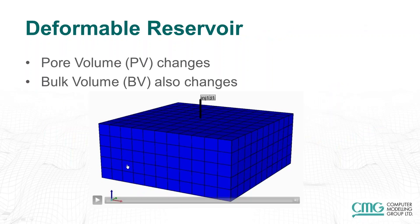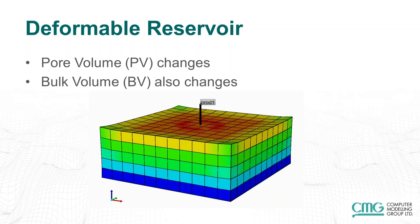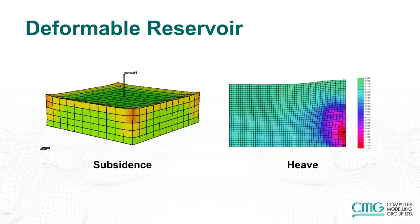In a deformable reservoir, both the pore volume and the bulk volume can change, which means the grid block shapes can change — as you can see happening in this animated slide. Here we have a producer and an injector in a cyclic steam simulation; because of the operation of these wells, the ground subsides and the grid block shapes are changing. Another example: on the left side, a producer well in a simple reservoir causes subsidence, meaning the top of the reservoir sinks in. On the right-hand side, an example from steam assisted gravity drainage where steam is injected at high pressure and temperature, causing the top of the reservoir to rise — called heaving. In both cases, the grid block shapes have changed with time.